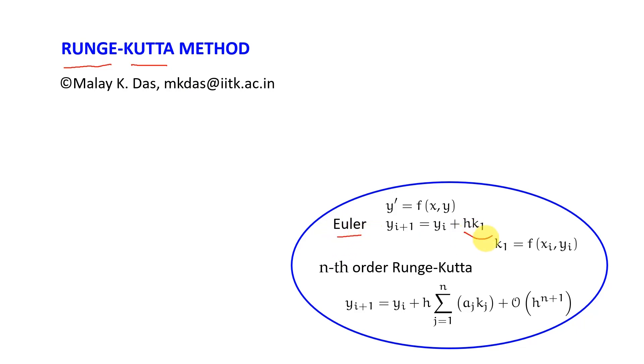doesn't take this entire step h·k1 in one shot. Instead it replaces this h·k1 as a summation of several small steps, and by doing so it can have an arbitrary order of accuracy, that is h to the power n plus one.